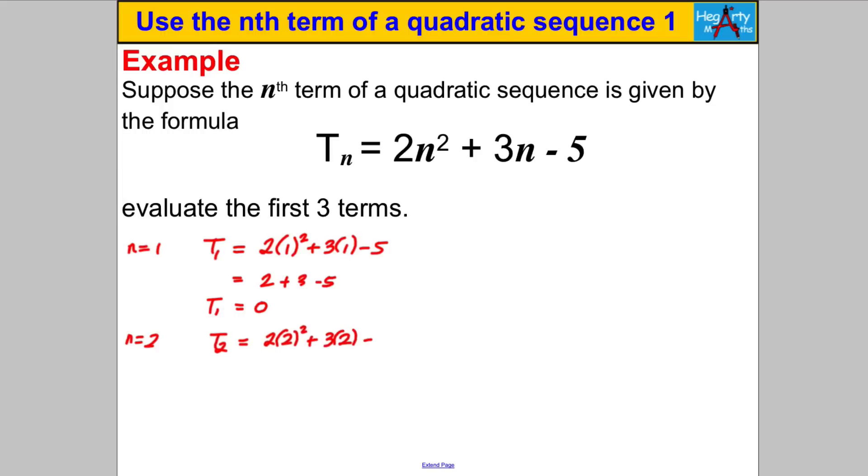Let's then make n be 2 and try and work out T_2 ie the second term so that's going to be 2 bracket 2 squared add 3 bracket 2 take away 5. 2 squared is 4 times 2 is 8, 3 times 2 is 6, 8 add 6 take away the 5 and that's going to give us the answer 9 so T_2 is equal to 9. Let's finish off by letting n be 3 I'm going to work at T_3 which is going to equal 2 bracket 3 squared add 3 bracket 3 take away 5.